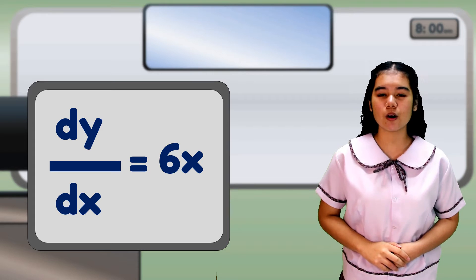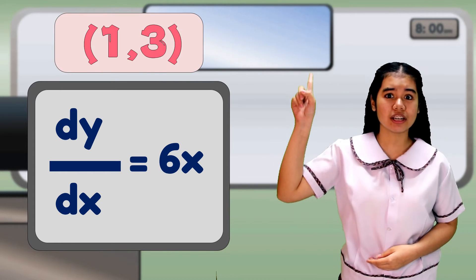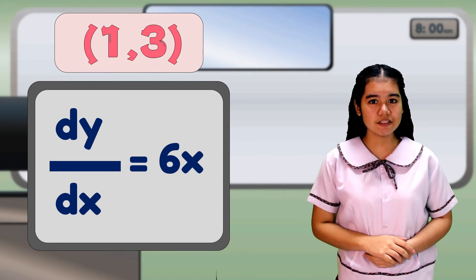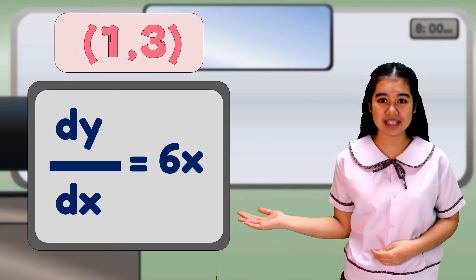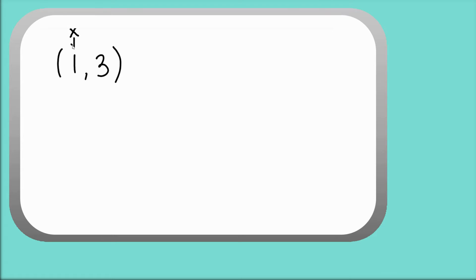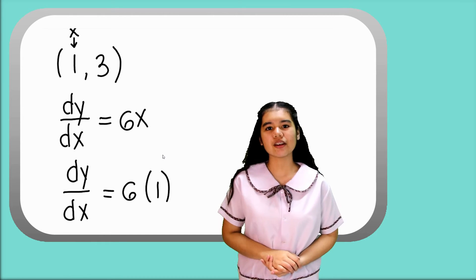Second, to find the gradient or the slope, substitute the given point (1, 3) into the differentiated equation dy/dx = 6x. From the given point (1, 3), the value of x is equal to 1. So it becomes dy/dx = 6 multiplied by 1.